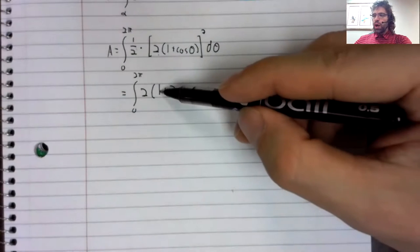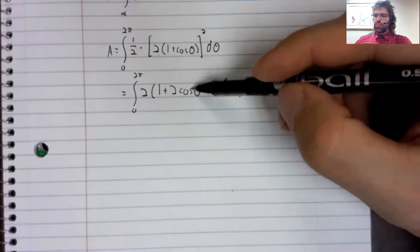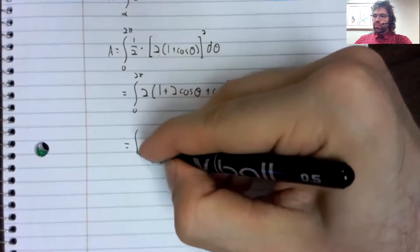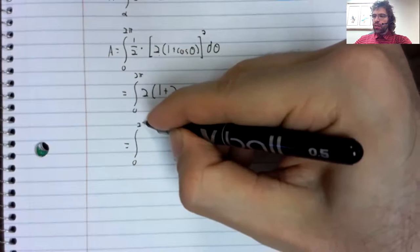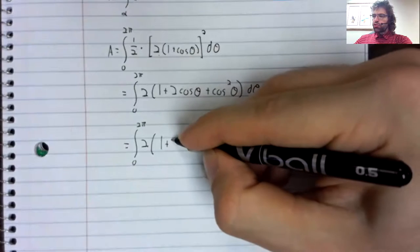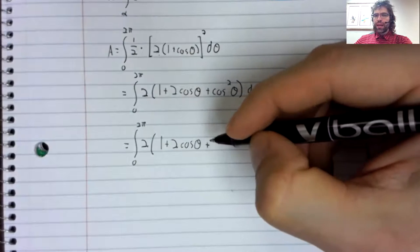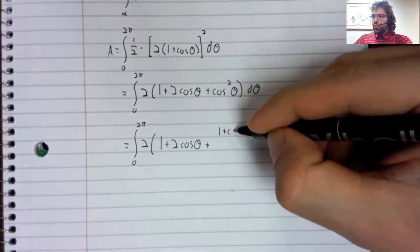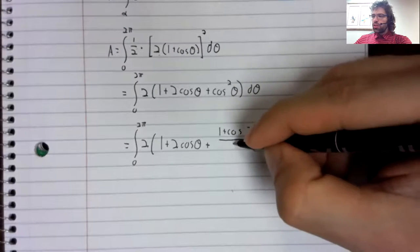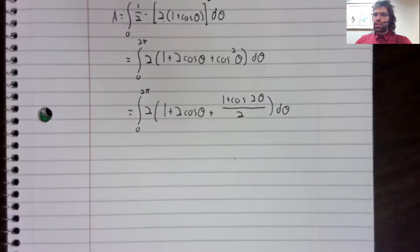The cosine squared. We never really spent a lot of time on even powers. But the trick here is that the cosine squared is one plus the cosine of two theta, all divided by two.